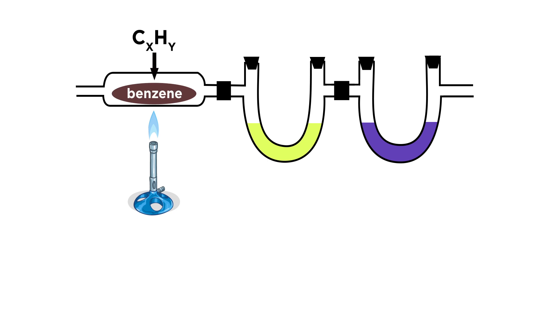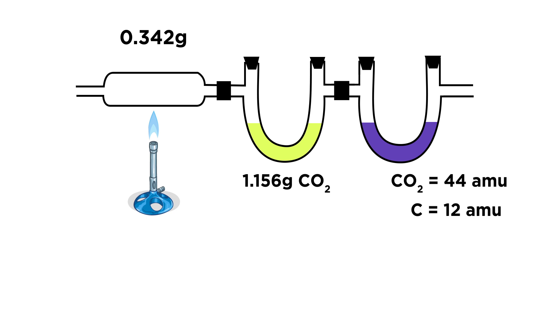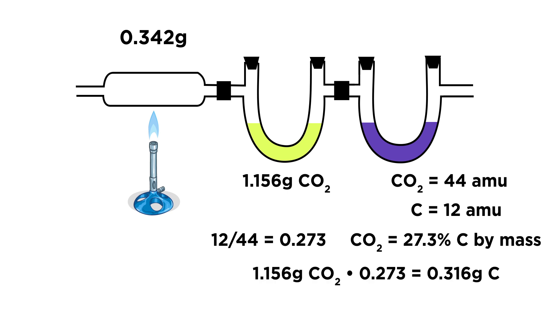So let's say we have a sample of benzene, but we have no idea what the ratio of carbon to hydrogen is. We burn a 0.342 gram sample and we collect 1.156 grams of CO2 in here. Since CO2 weighs 44 atomic mass units and a carbon atom weighs 12, each molecule of CO2 is 27.3 percent carbon by mass. That means in the CO2 there are 0.316 grams of carbon.